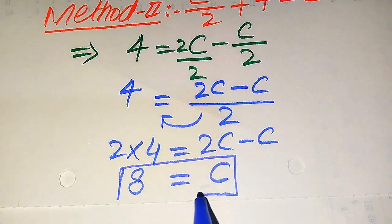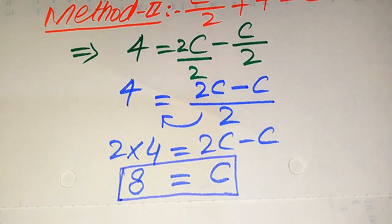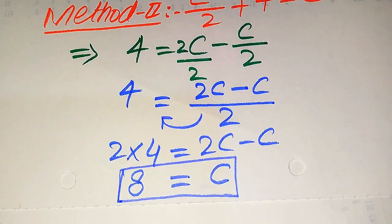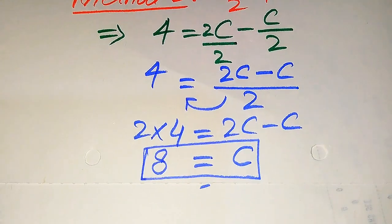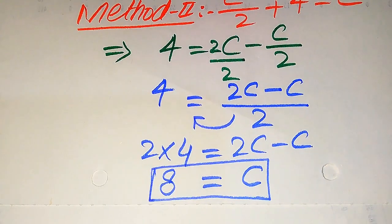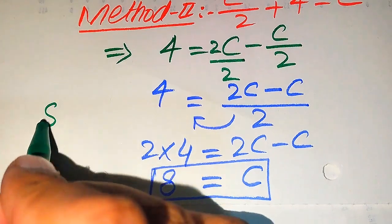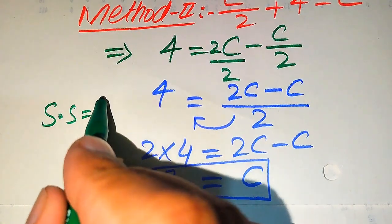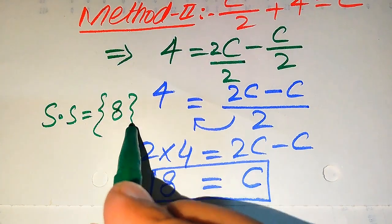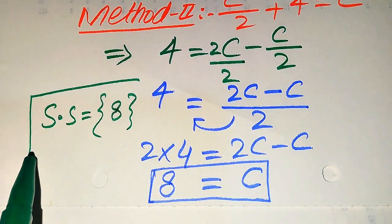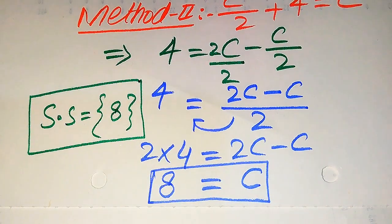We obtain 2 times 4 equals 8, and 2C minus C equals C, so C equals 8 is the only solution from the second method as well. Since we already verified in the first method that C equals 8 satisfies the given equation, our final conclusion is that the solution set is 8, which is the only solution obtained from both methods.